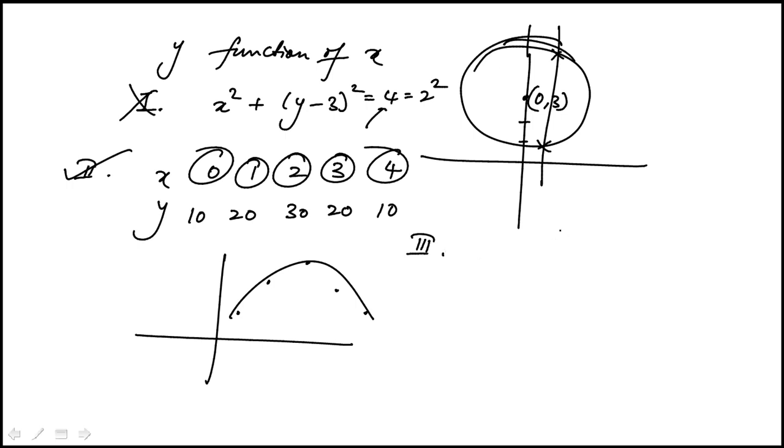So two is a function. And then finally three, they've given you this piecewise function. And again, if you were to draw a vertical line here, you'll find that there is discontinuity but you have a unique value for each.